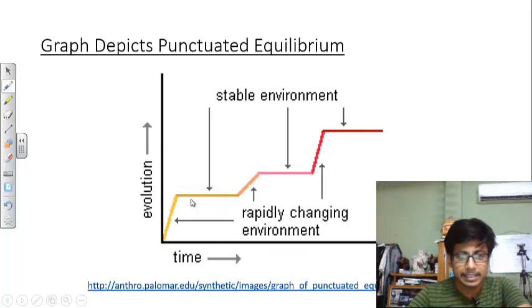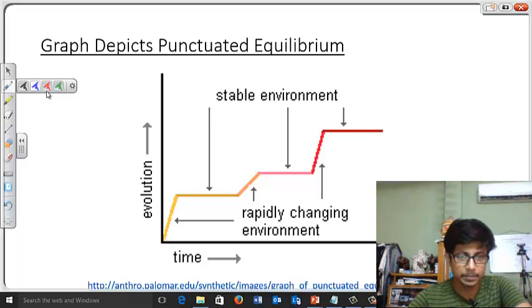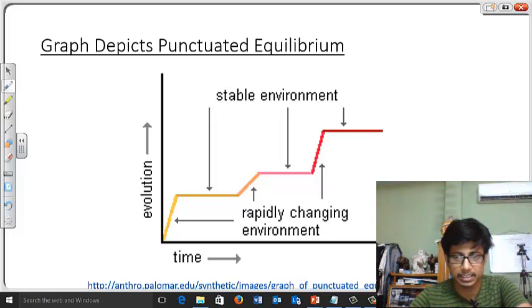And if you see here, this is an example of a punctuated equilibrium graph. It begins with time on the x-axis and evolution on the y-axis. From time, along with time, evolution obviously works with time. So it will move like this. If it is gradual evolution, it will offer something like this straight kind of thing.